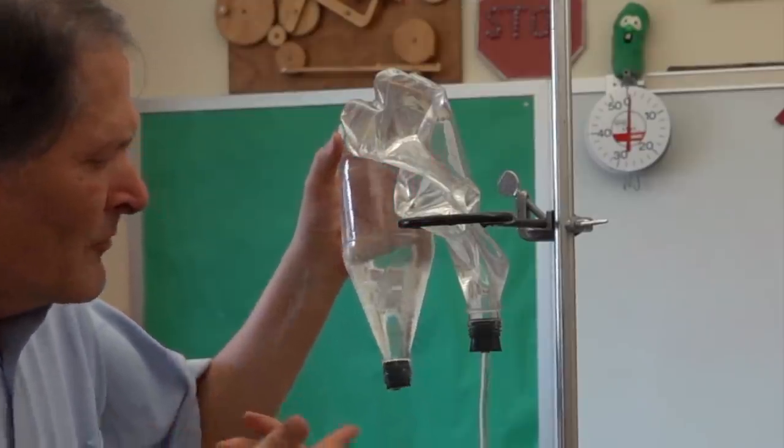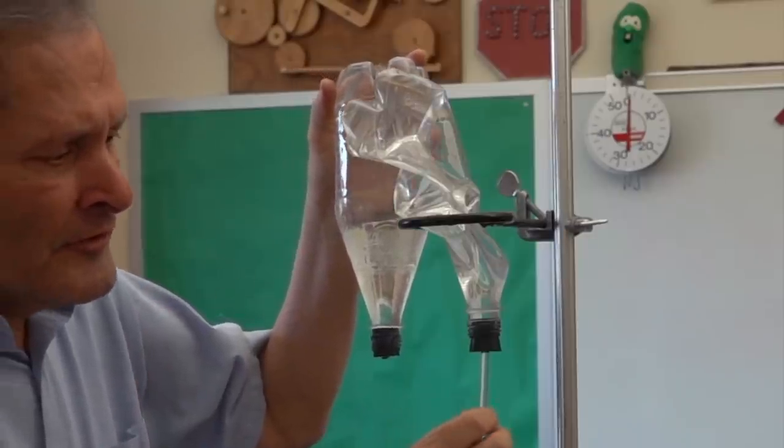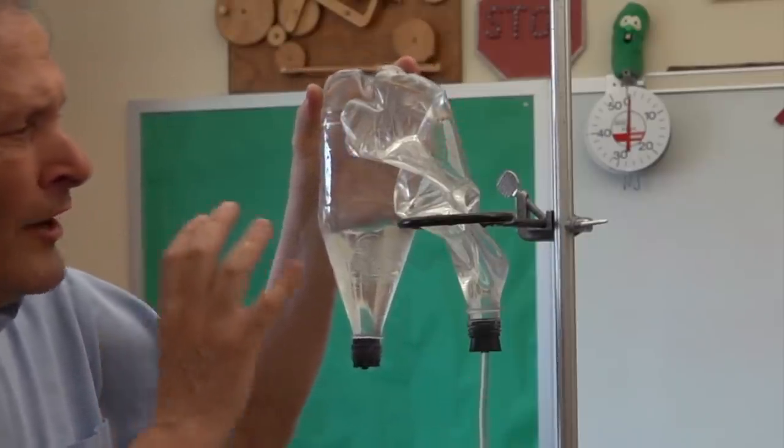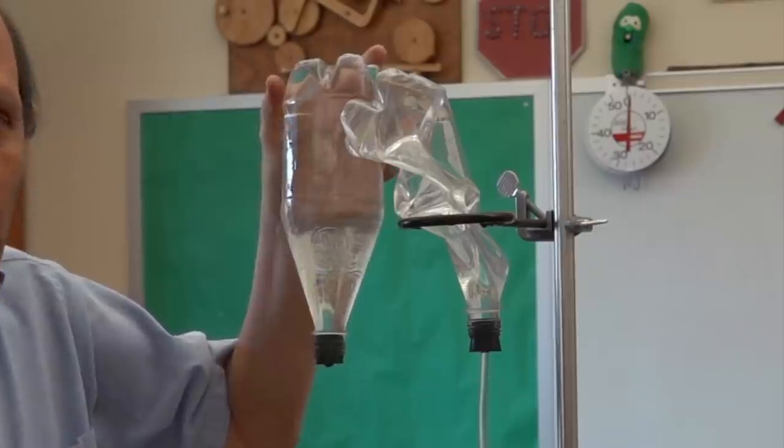Now, these are the same type of bottles with the same stoppers in it. The only difference is this has a short hose added to it. Why is there such a dramatic difference in the bottles?